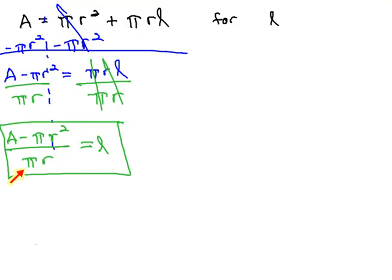Be careful not to divide out the pi's or the r's because of the subtraction in the numerator. Recall we can only reduce fractions if there is only multiplication and division. With any adding or subtracting in there, we cannot reduce the terms. That is not allowed.